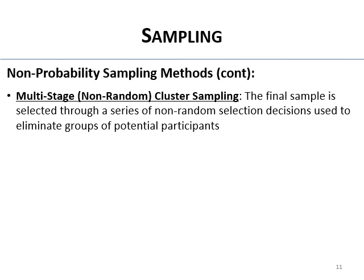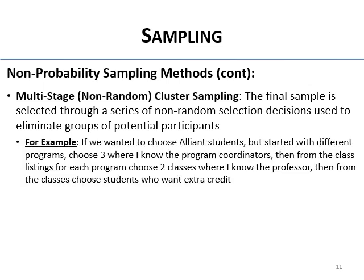There's also multi-stage non-random cluster sampling — just like the random multi-stage method, but not random. For example, to choose Alliant students, you start with different programs but choose three where you know the program coordinator. From the class listings for each program, you choose two classes where you know the professor or who's been recommended. Then from those classes, you ask who wants extra credit and choose those students. Multiple stages to arrive at the final sample, but done conveniently rather than randomly.